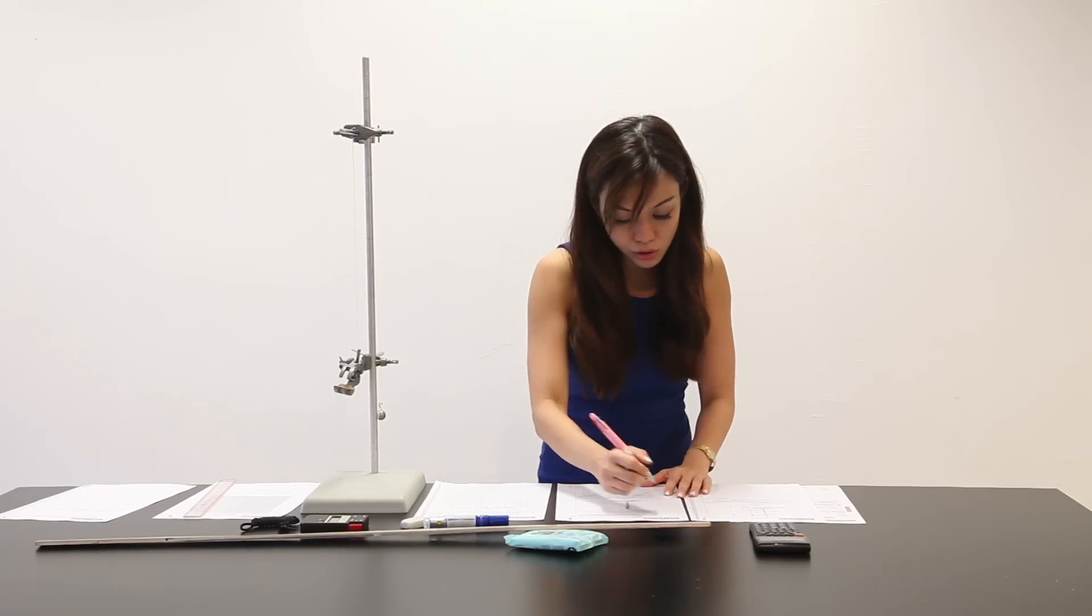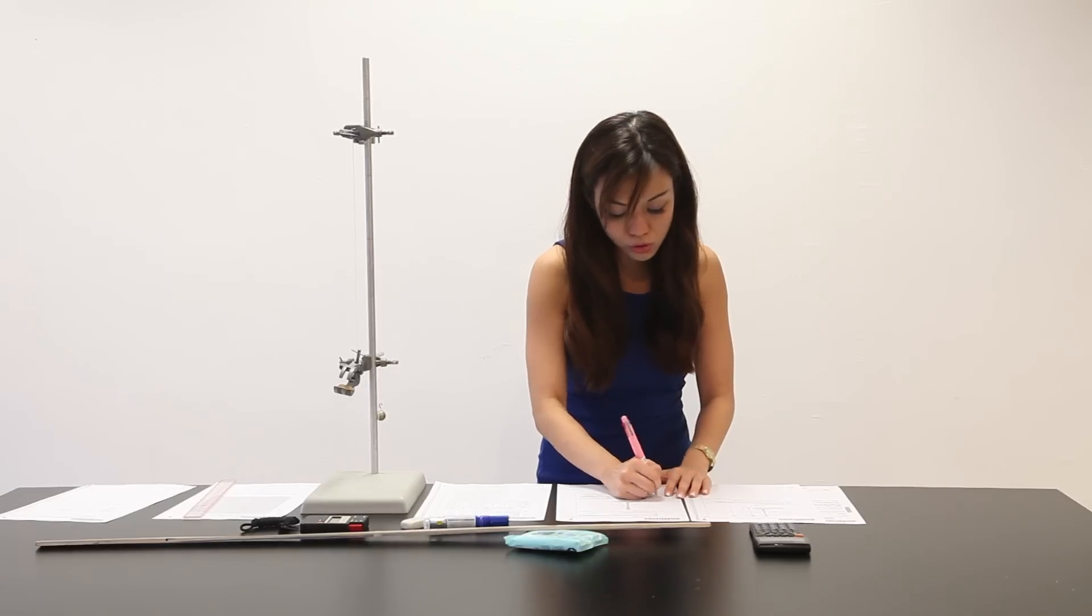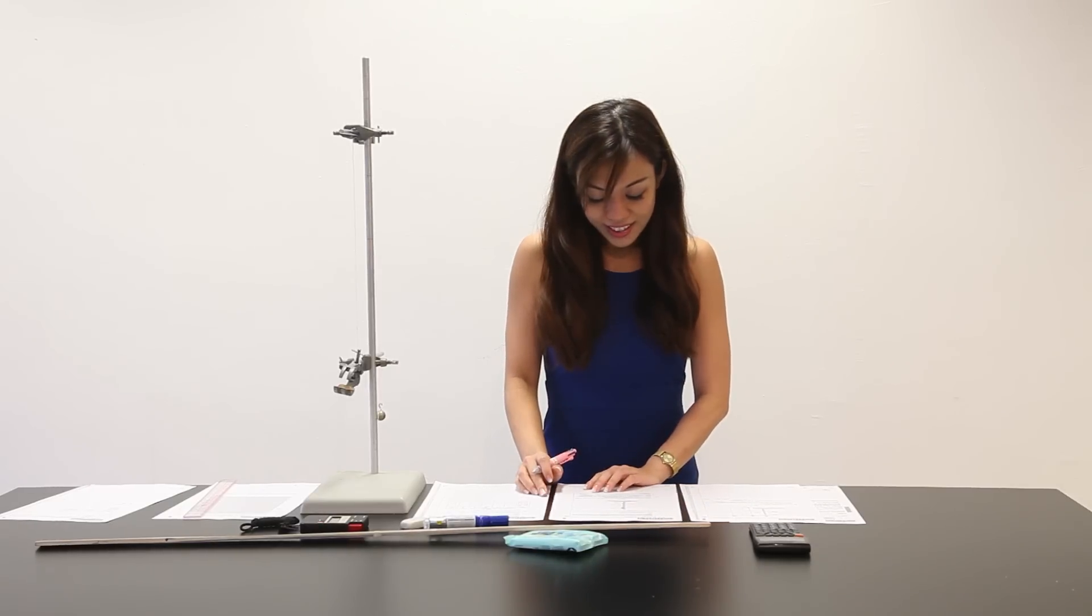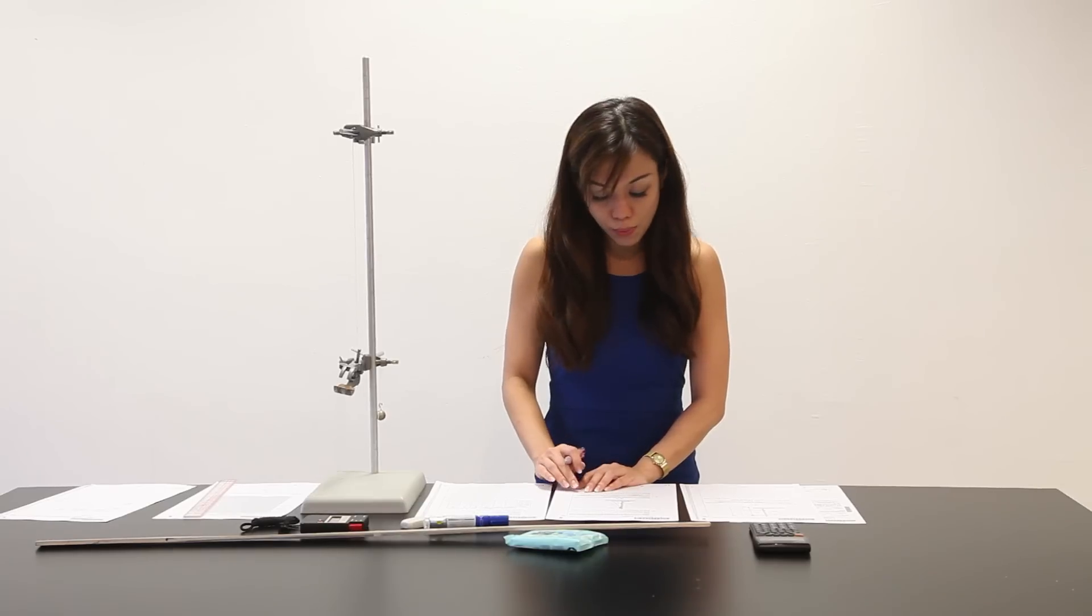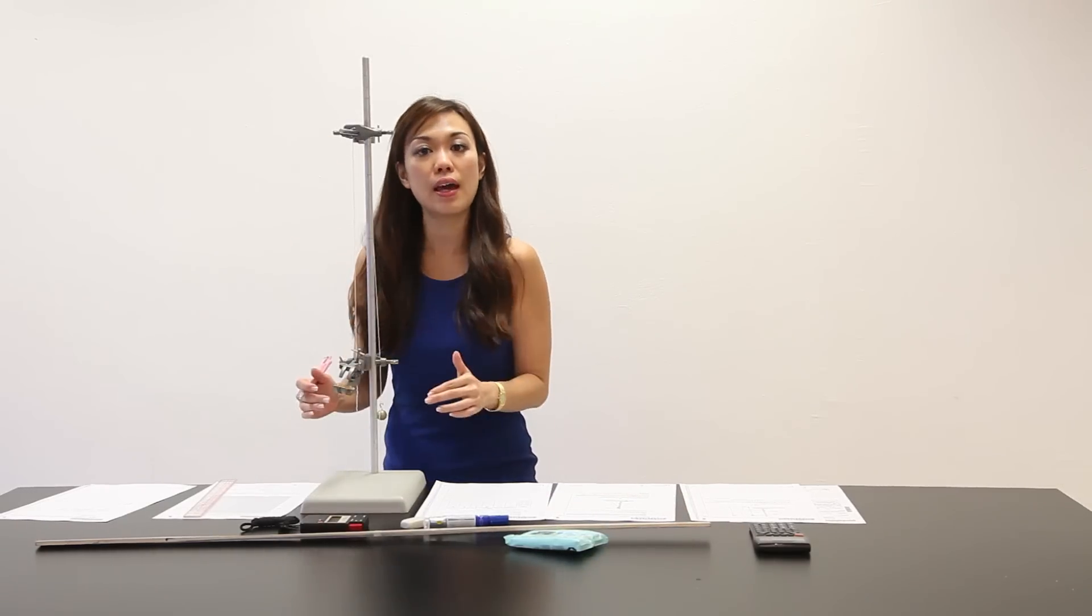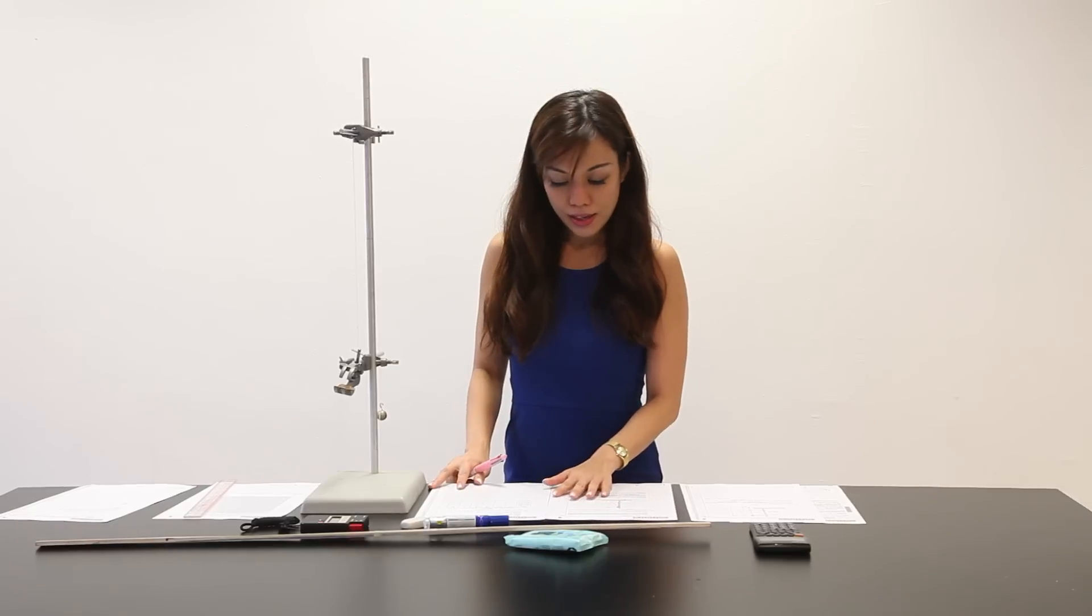We have to repeat instruction 2 all the way to instruction 4 and record the value of the time t2 in table 1.1. So, for every single reading here, we have to repeat the reading twice.